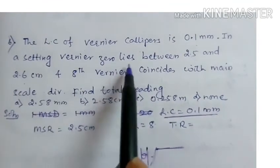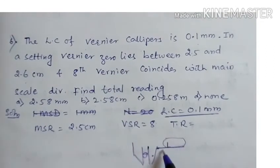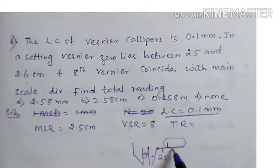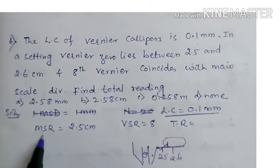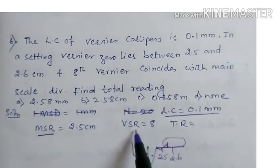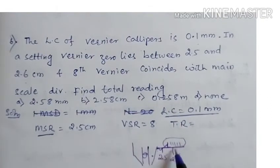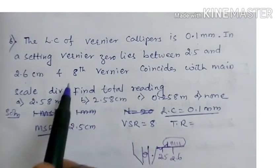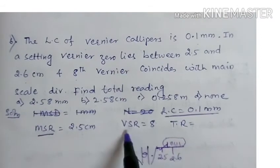In the zero setting, zero lies between 2.5 and 2.6. So the main scale reading we take is the left side reading, that is 2.5. Then the vernier scale reading is the 8th division — so vernier scale reading is 8.